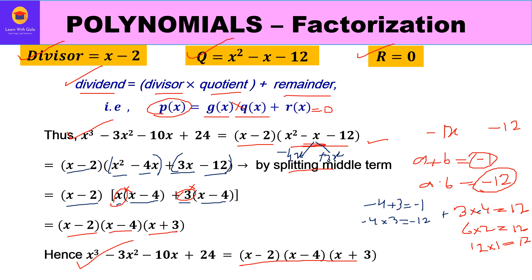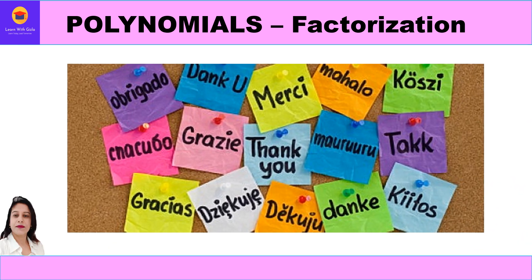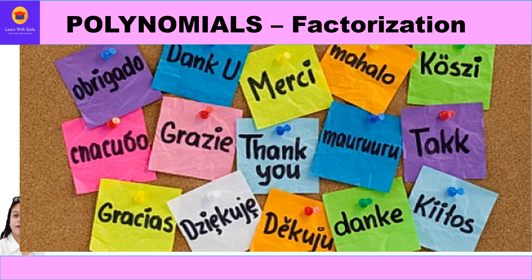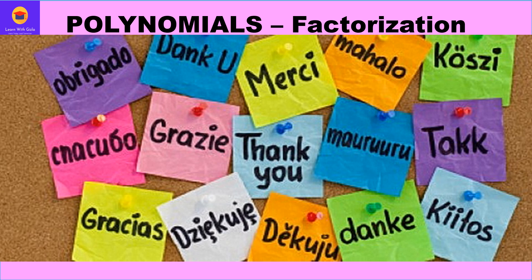The only difference between the two methods is that in the first method we find all zeros by hit and trial, while in the second method we find only one factor by factor theorem and then use long division. I hope you've understood both methods. In the next video we'll take questions from NCRT Exercise 2.4. Thank you and have a great day!